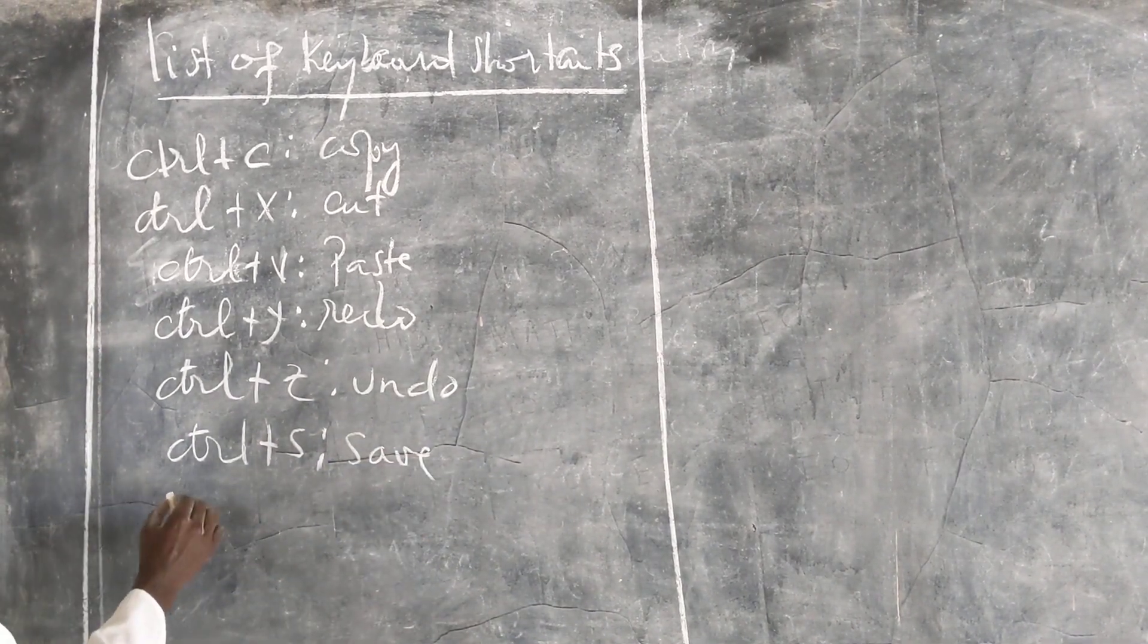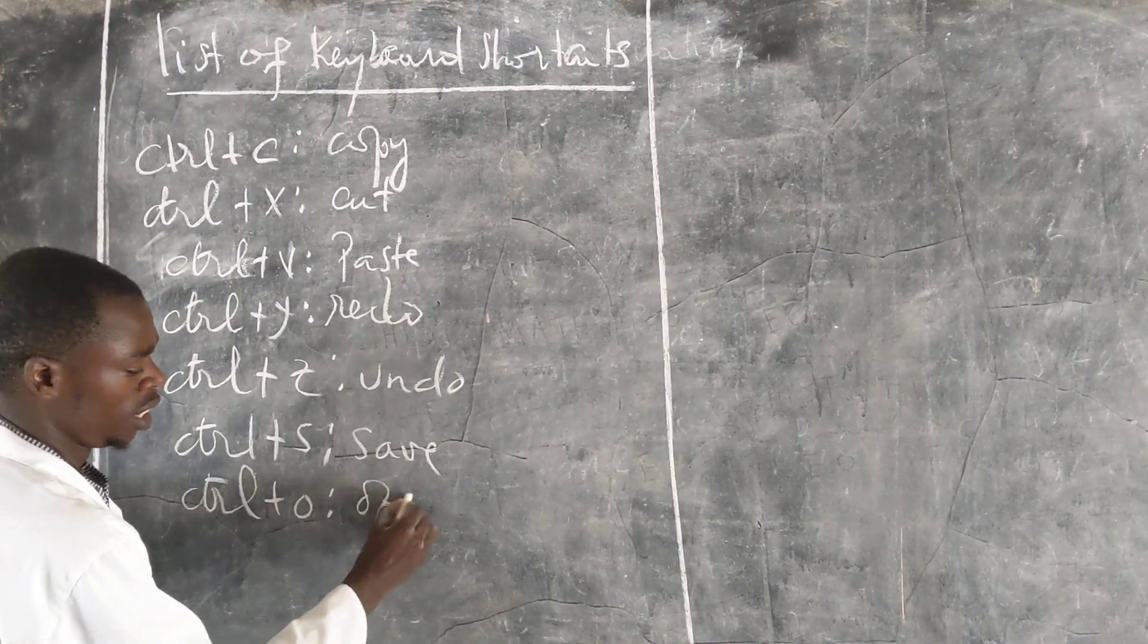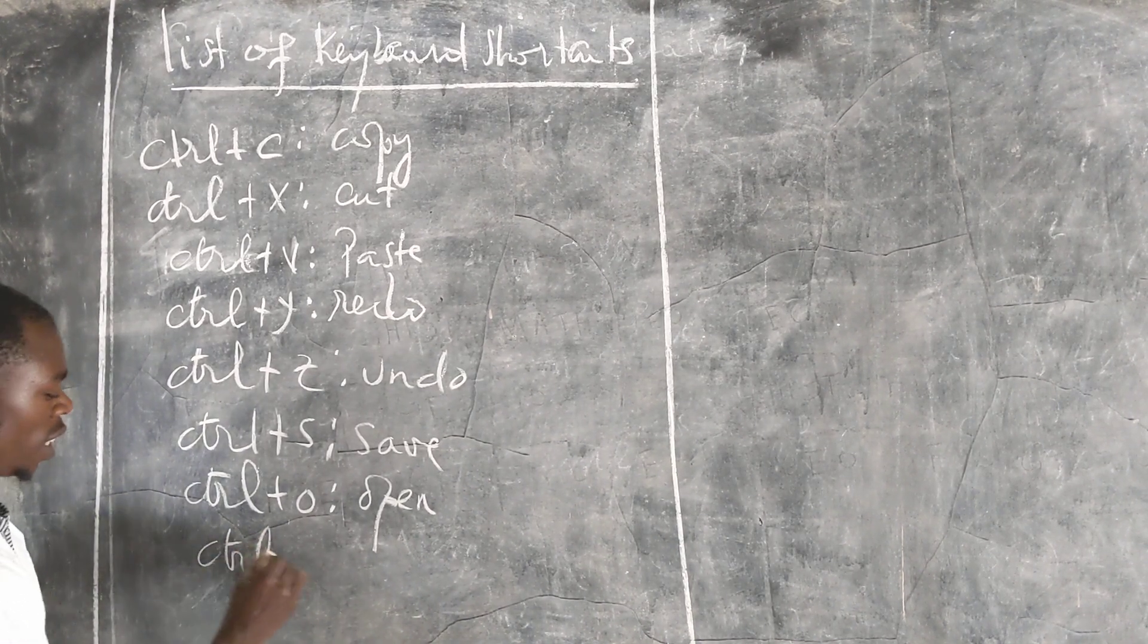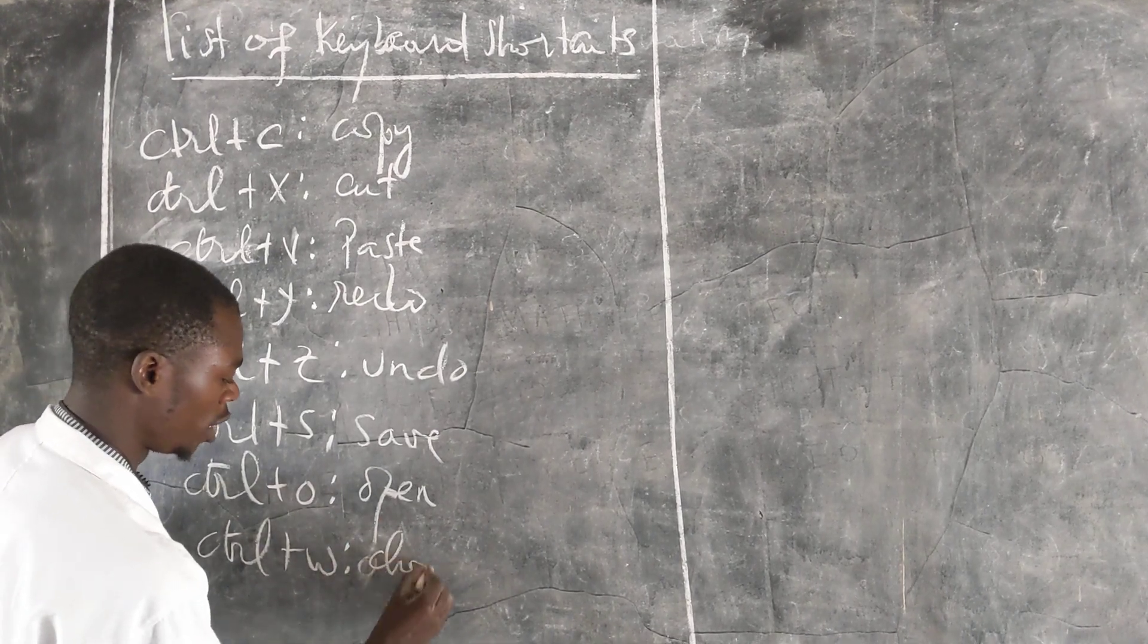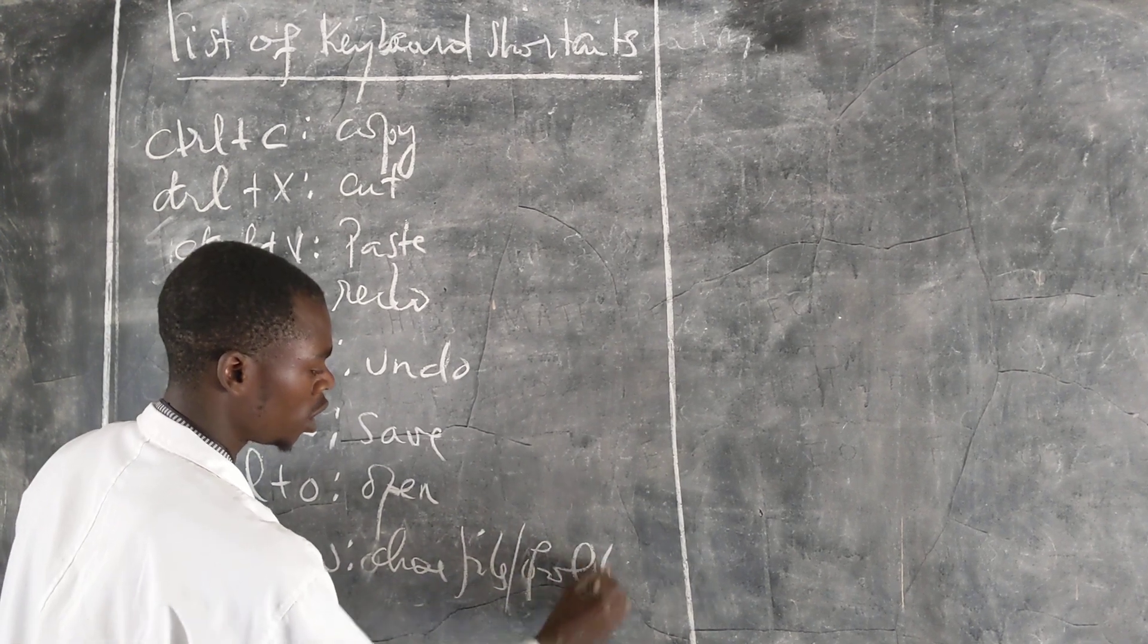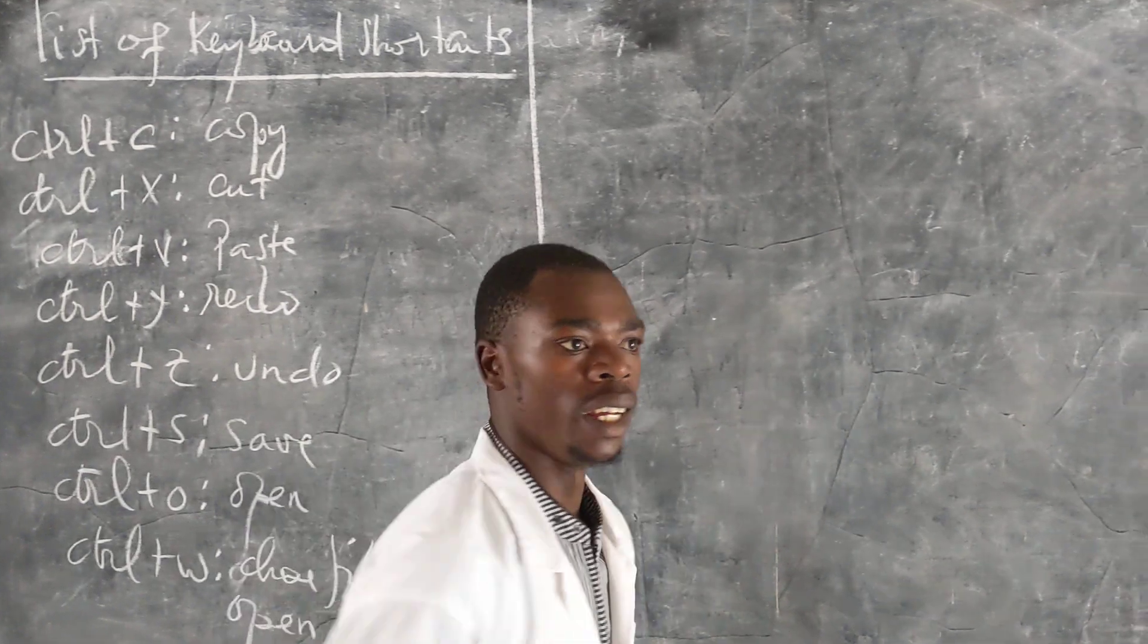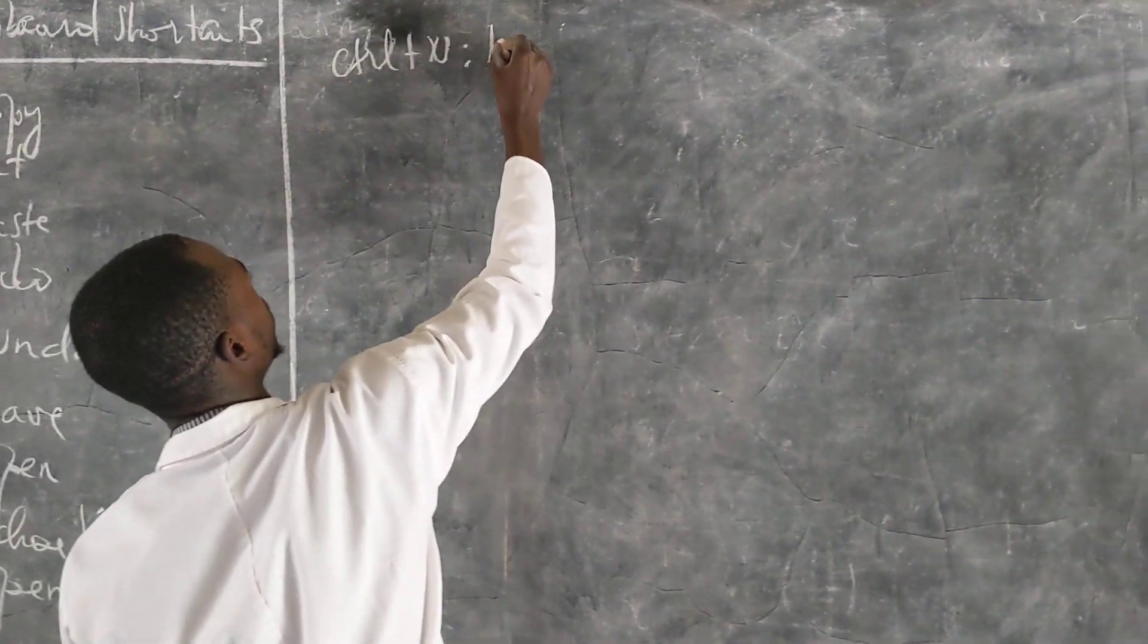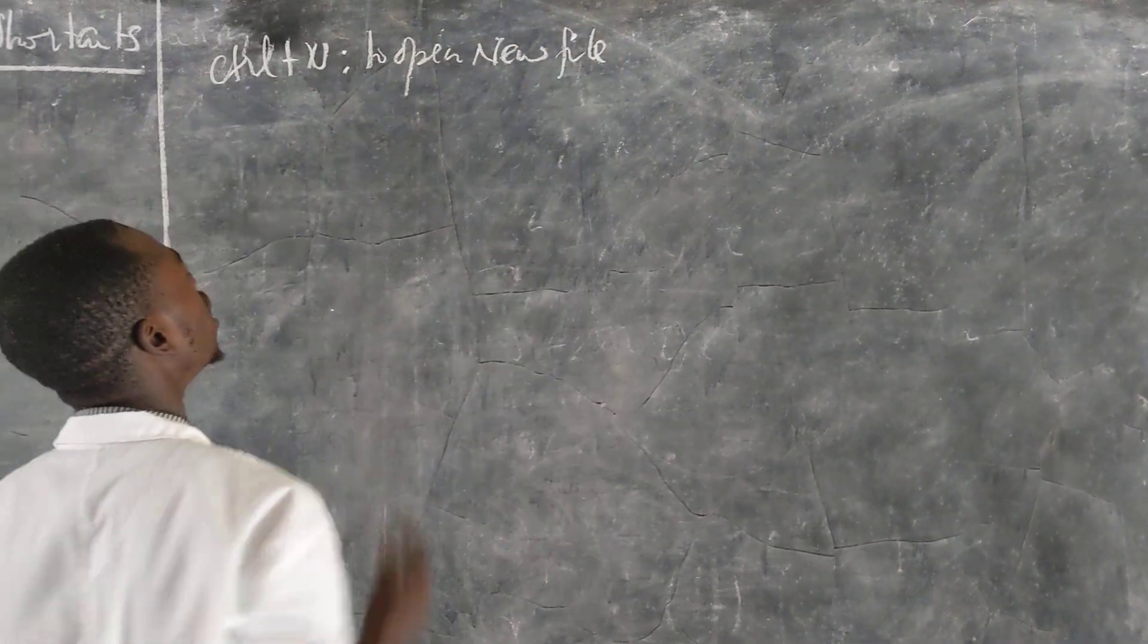Ctrl plus O this is open. Ctrl plus W this is close files or folder. Then the next one, control and press the N to open a new file.